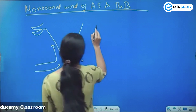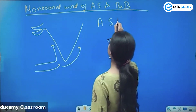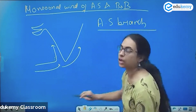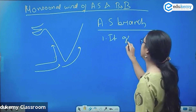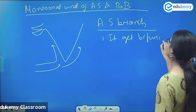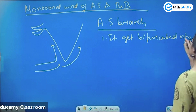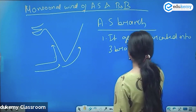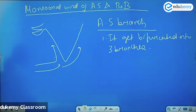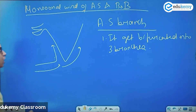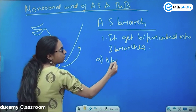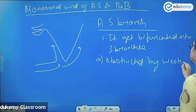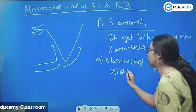The Arabian Sea branch gets bifurcated into three branches. The first branch is obstructed by the Western Ghats.